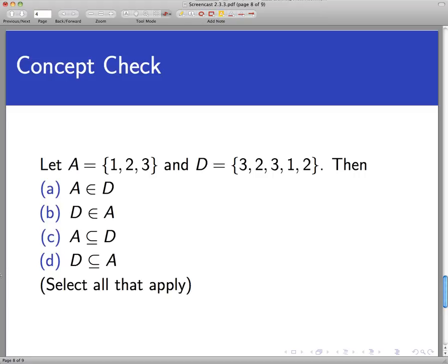And we are back. And the answers here, there is more than one, are C and D. It's the case that A is a subset of D and that D is a subset of A too. But we don't say elements. So let's think about why these two are true. And then we'll think about why these two are false.